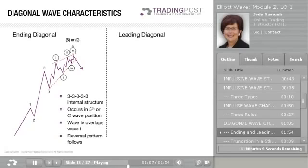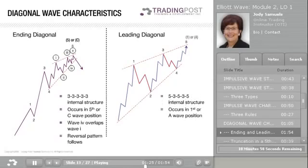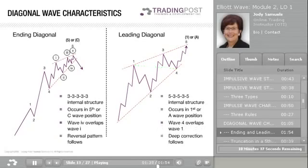In the case of a downtrend, it is a falling wedge. The internal structure of a leading diagonal is comprised of five, three, five, three, five subwaves — a combination of impulse and corrective wave patterns. Leading diagonals occur in the first wave position or in the A position in an ABC correction. Wave 4 also overlaps Wave 1. Leading diagonals usually precede a deep correction or retracement. Sometimes the diagonal triangle takes on an expanding shape rather than a wedge shape, where the boundary lines diverge. In a wedge shape, the boundary lines converge.